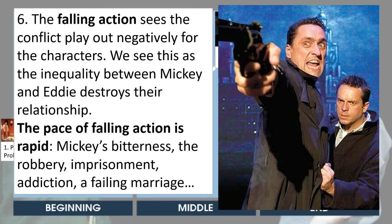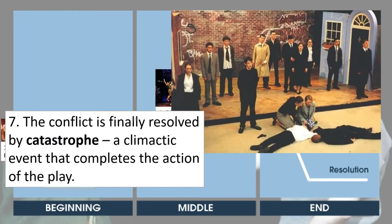Following the peripatea, we get the falling action in which events play out negatively for the key characters. Particularly for Mickey, his class status and inequality will destroy his life in a sequence of rapid events: his bitterness at being unemployed destroys his relationship with Eddie; this leads him to take part in the robbery with Sammy, which leads to a murder; he is imprisoned somewhat unjustly, leading to his addiction, the collapse of his marriage, Linda calling Eddie, and their affair. These events lead all the way through to the catastrophe, in which Mickey approaches Eddie with the gun and shoots Eddie, and is himself shot. At this point the play reaches a circular ending — the promises of the narrator at the very beginning have been fulfilled and we achieve a kind of completeness.